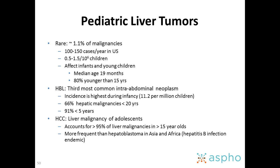Hepatoblastoma is the third most common intra-abdominal neoplasm. The incidence is highest during infancy. It accounts for around two-thirds of hepatic malignancies in kids younger than 20 and 90% of those younger than 5.